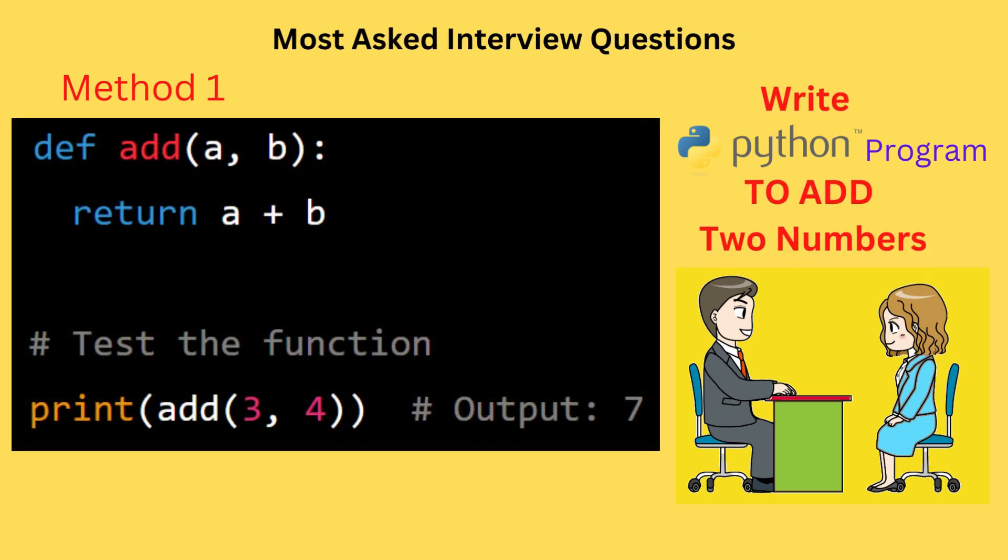To add two numbers in Python, you can use the following code: def add(a, b): return a + b, print(add(3, 4)).